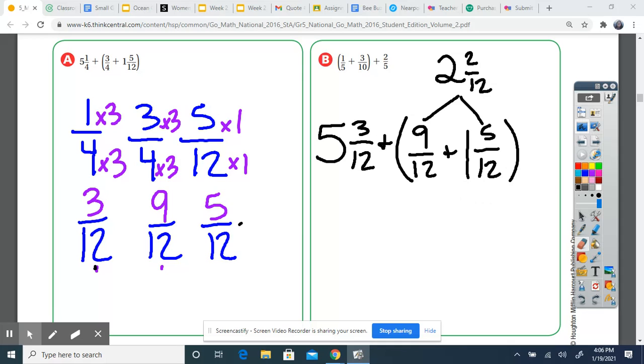So now I have five and three twelfths plus two and two twelfths. So now I just have two mixed numbers, so I'm going to add the whole numbers first. Five plus two gives me seven.